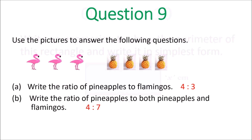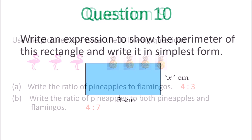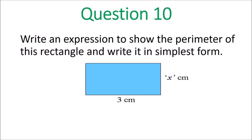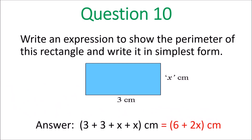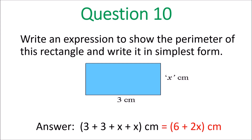Question 10: write an expression for the perimeter of this rectangle in simplest form. You add three and three, and the other sides are x and x, so it's three plus three plus x plus x. Simplify that: three plus three is six, x plus x is two x — so the final answer is 6 + 2x centimeters.